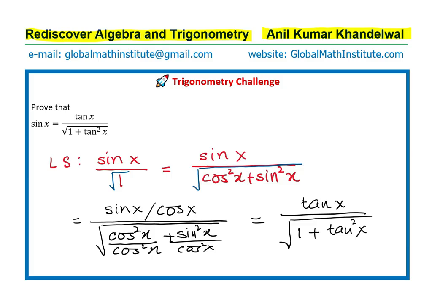You see how we move from the left side to the right side with a simple strategy. That strategy was dividing by the square root of 1, where 1 is cos square x plus sin square x, and then dividing both numerator and denominator by cos x to get the result.